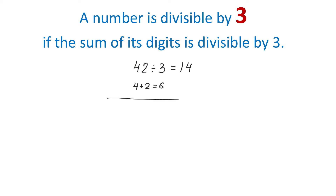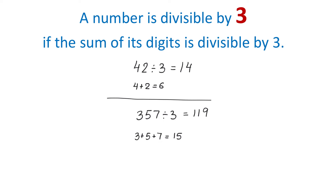Let's see another example. 357 is divisible by 3 because if we add the digits 3, 5, and 7, we get 15, and 15 divides by 3. Then 357 divided by 3 is 119. So, if we add the digits of a number and we get a number that is divisible by 3, then this number is also divisible by 3.